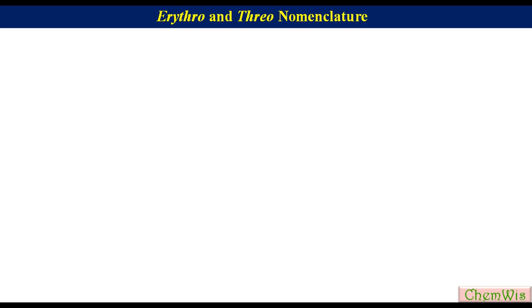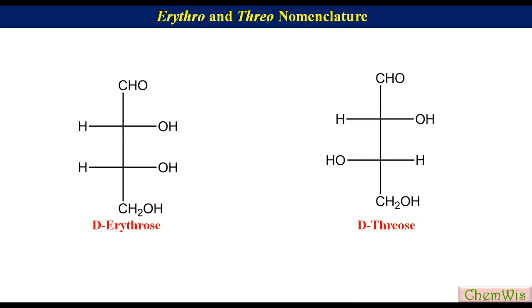Hello friends, welcome to the stereochemistry lecture. The topic of today's discussion is erythro and threo nomenclature. This nomenclature is based on four-carbon aldosugars: D-erythrose and D-threose. If you look at the Fischer projection formula of D-erythrose and D-threose, the two chiral centers are different.